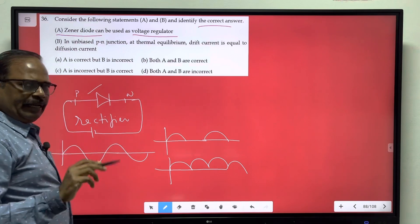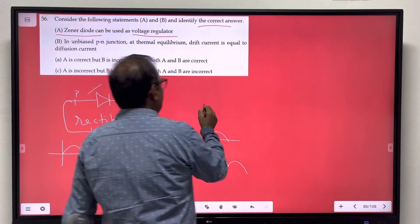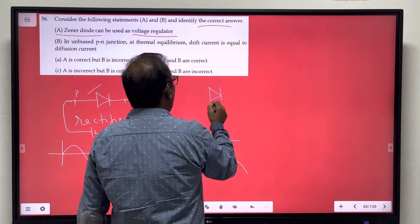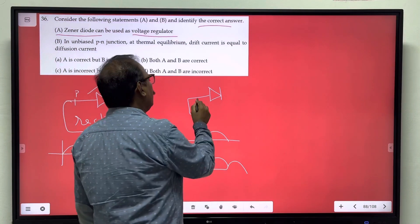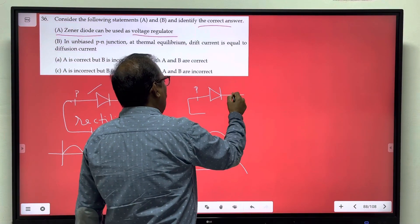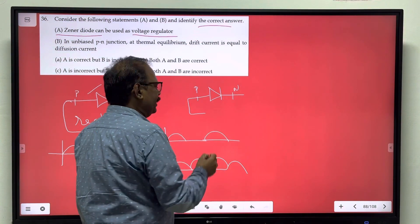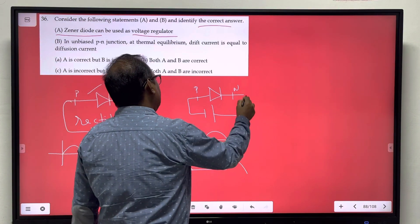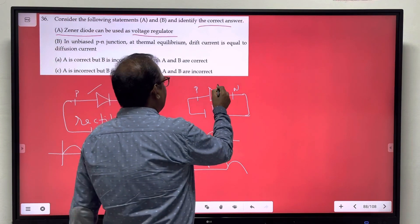Zener diode is reverse bias. Reverse bias the diode works. That means high potential breakdown, that Zener.